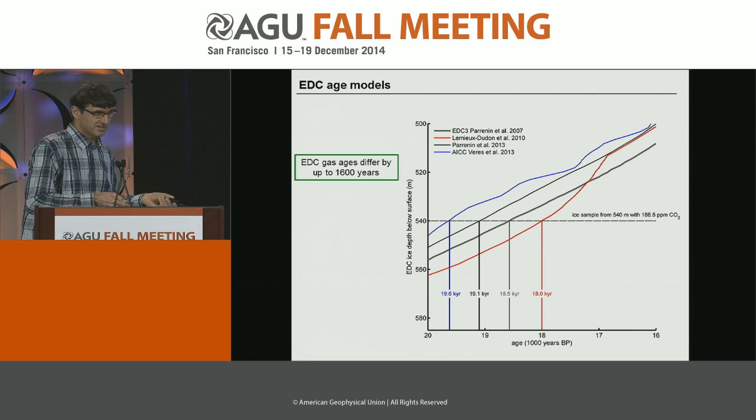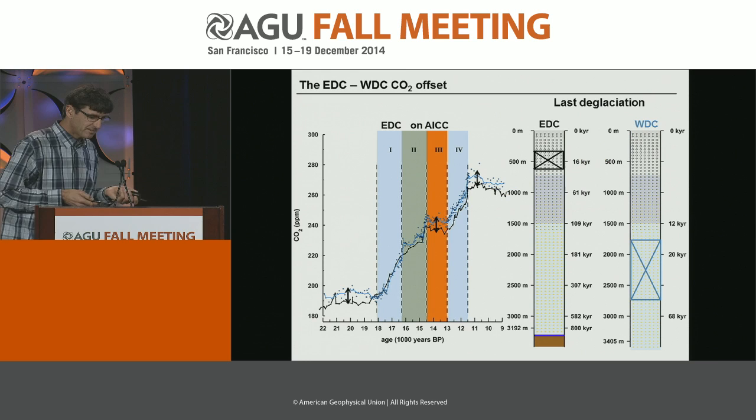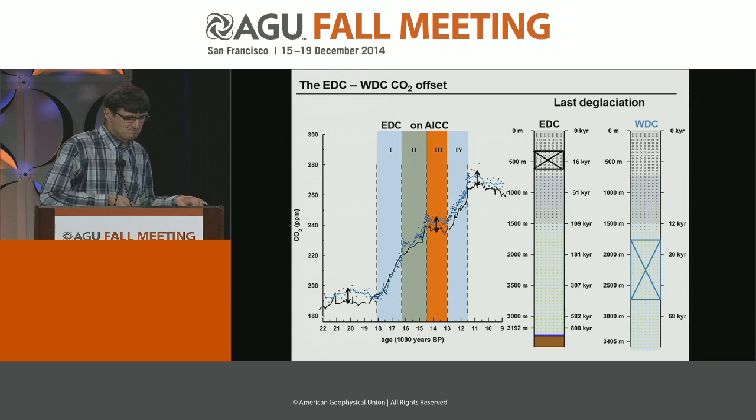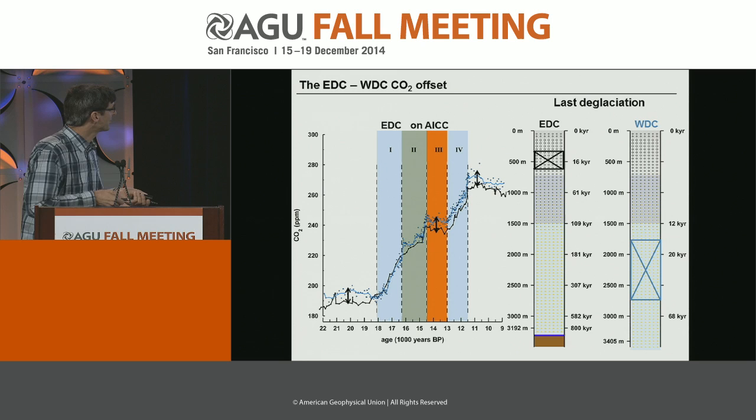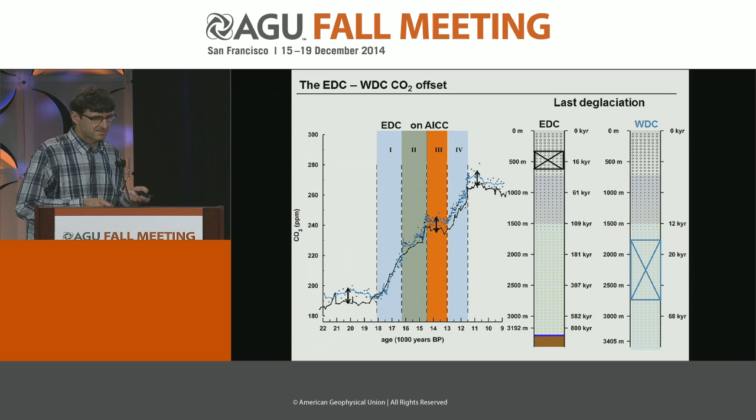The second feature is a slight offset in the CO2 measurements, and it's not really clear what the reason is. EDC was measured in bubble ice, while the WAIS Divide record was measured on clathrate ice. So it could be that ice properties are related to the extraction devices — it's not clear.